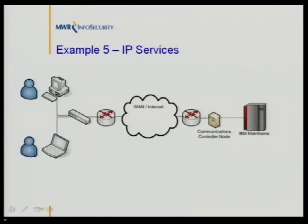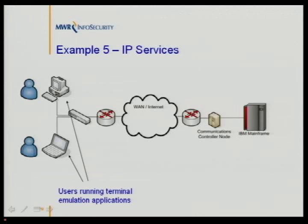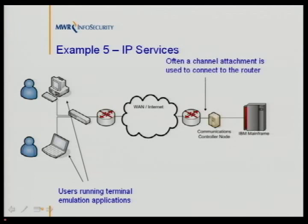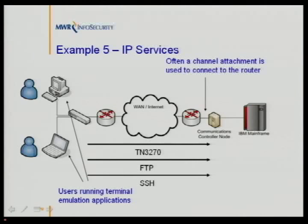Of course, there's also IP directly. IBM mainframes have had IP support for a long time. Users typically run a terminal emulation application, and a router in front of the mainframe can connect directly to it via channel attachment. You can then run IP protocols across the network: TN3270 — essentially telnet with formatting — as well as FTP, SSH, or any other IP services the mainframe supports.